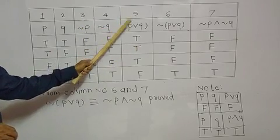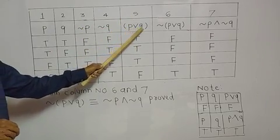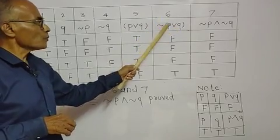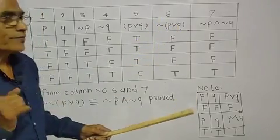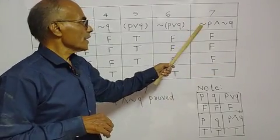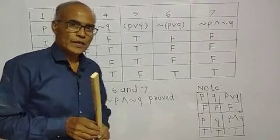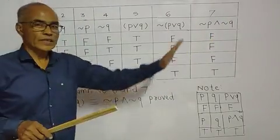Column 5 P or Q, column 6 negation of P or Q, and finally column 7 negation of P and negation of Q. Now let's look at the truth table.